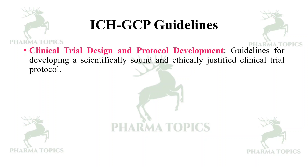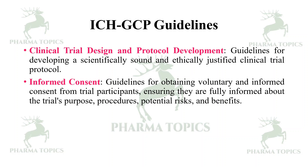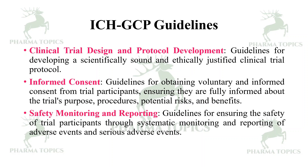The first guideline covers clinical trial design and protocol development — providing guidelines for developing a scientifically sound and ethically justified clinical trial protocol. The second guideline is informed consent: guidelines for obtaining voluntary and informed consent from trial participants, ensuring they are fully informed about the trial's purpose, procedures, potential risks, and benefits.